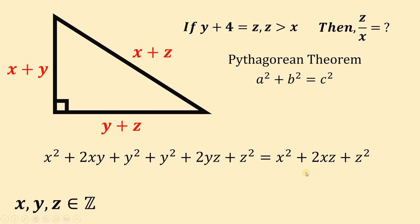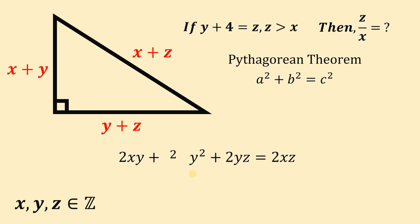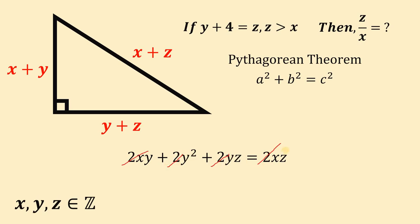Notice that x squared appears on both sides and z squared appears on both sides, so we can cancel them out. We are left with 2xy plus y squared plus y squared plus 2yz equals 2xz. Combining the two y squared terms gives 2y squared. Since all coefficients are multiples of 2, we divide through by 2, and rearrange to get: y squared plus xy plus yz equals xz.